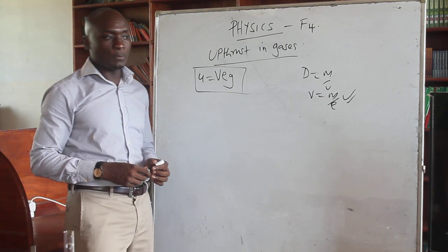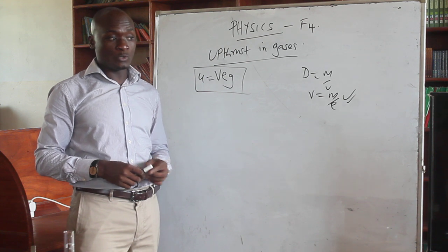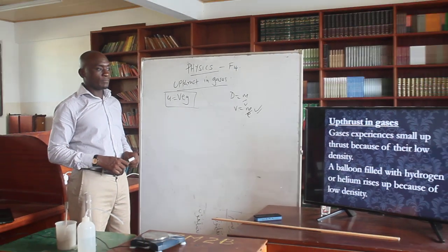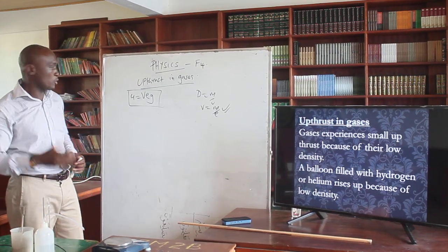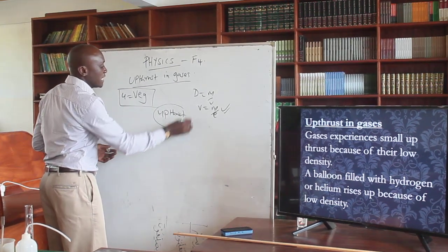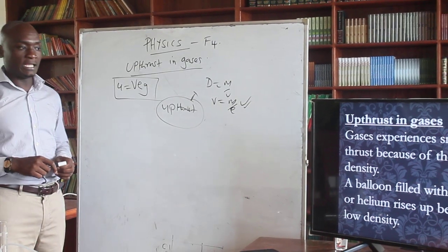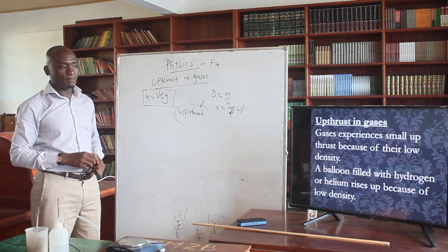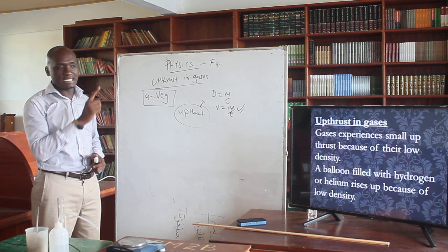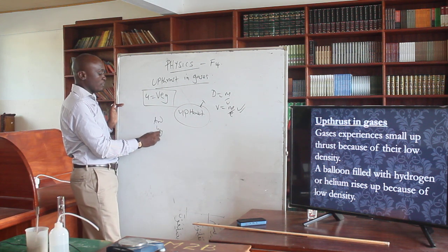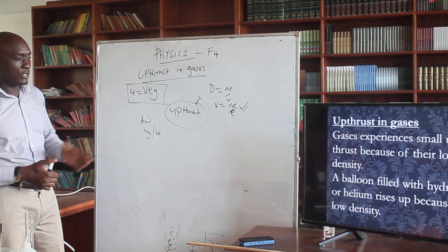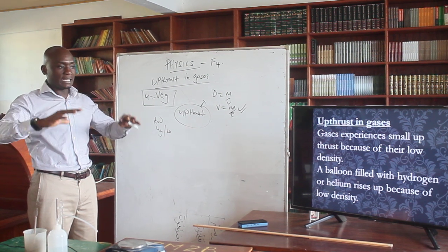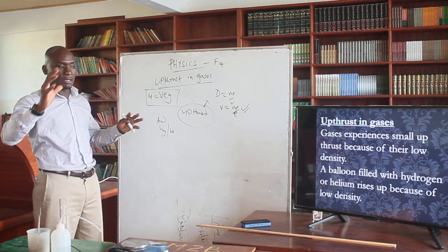We have seen balloons, we have seen some objects floating in air, even airplanes floating in air. But are we able to explain that in terms of upthrust? The upthrust in gases is a smaller force — a force that holds objects to float, be it in liquids or in gases. Gases have very low density. For example, a balloon filled with hydrogen or helium rises up because of its low density compared to the surrounding air, which is why the balloon floats and moves up.